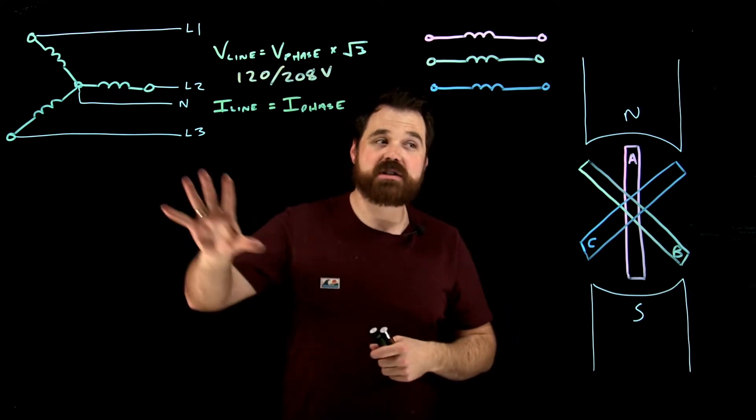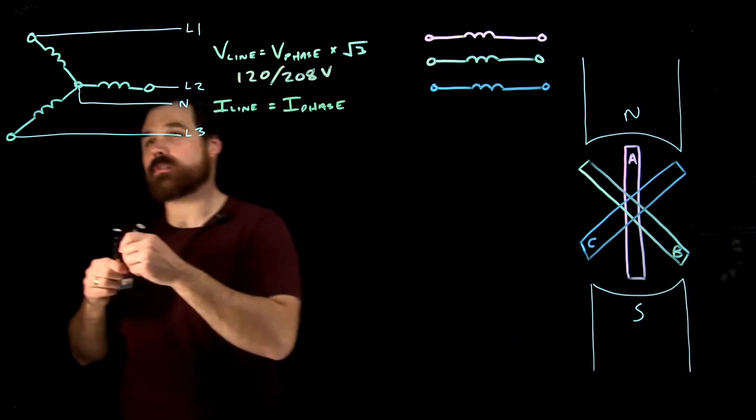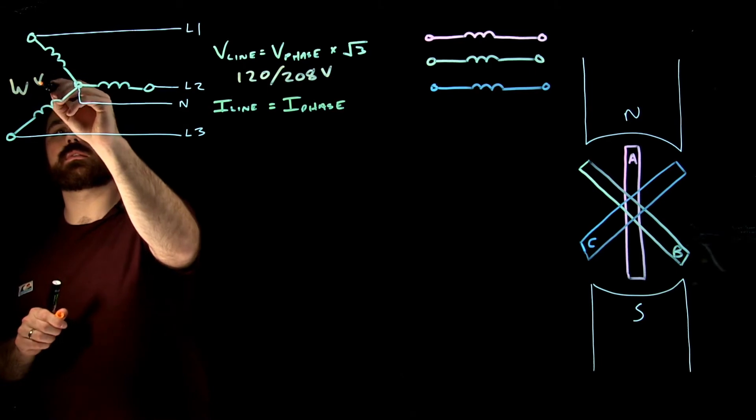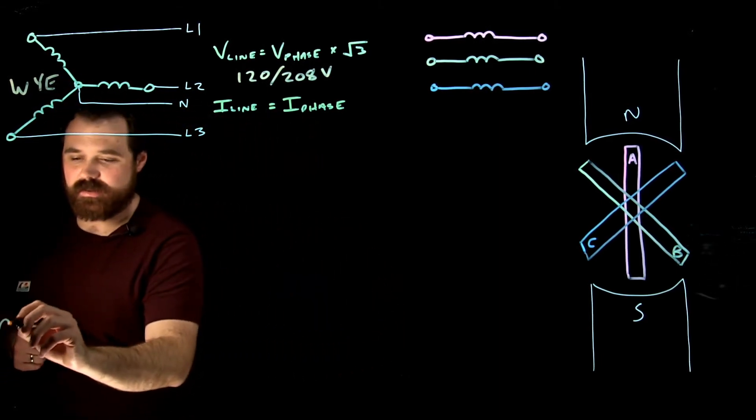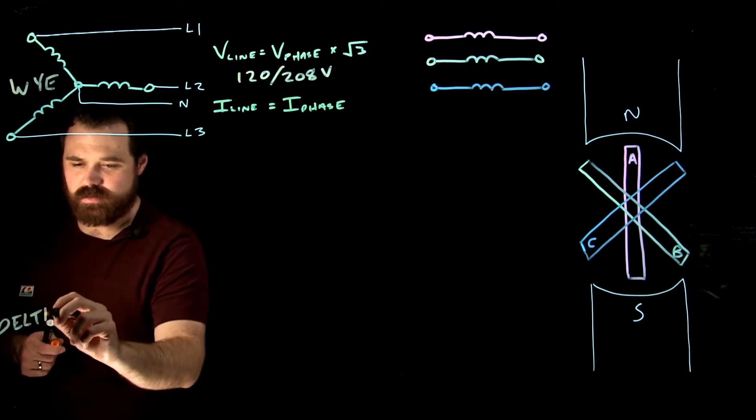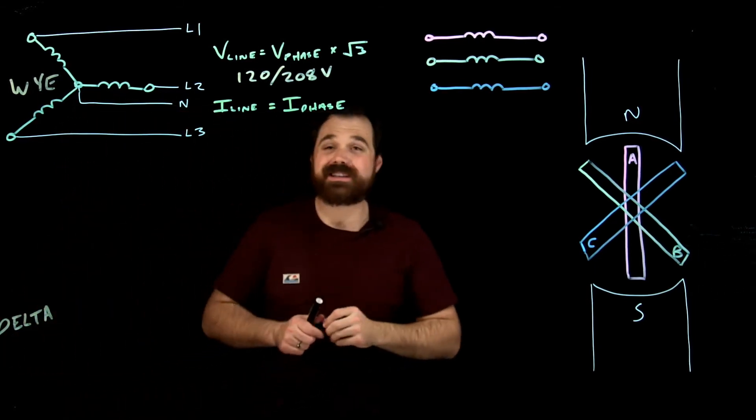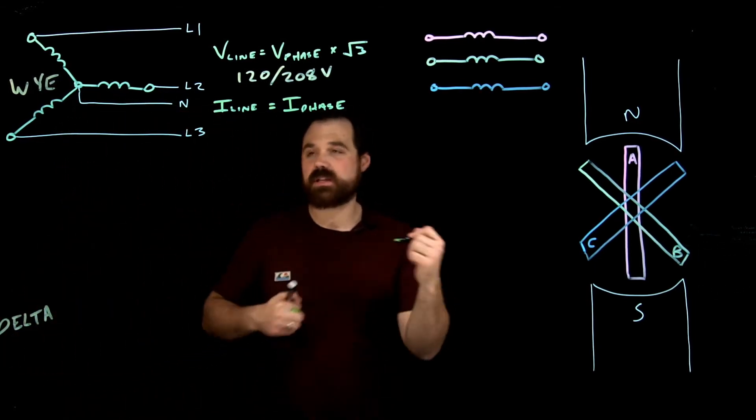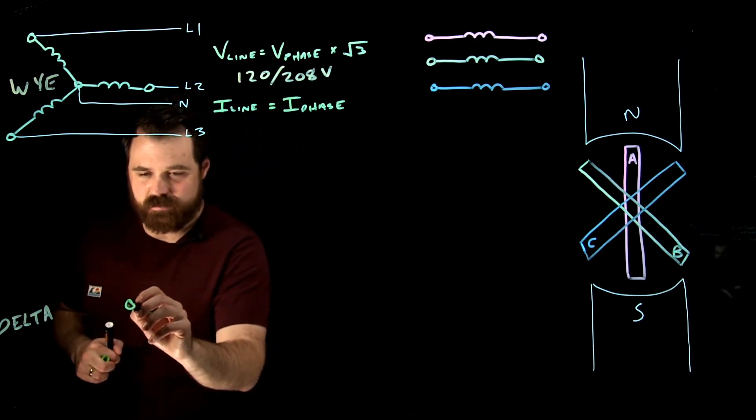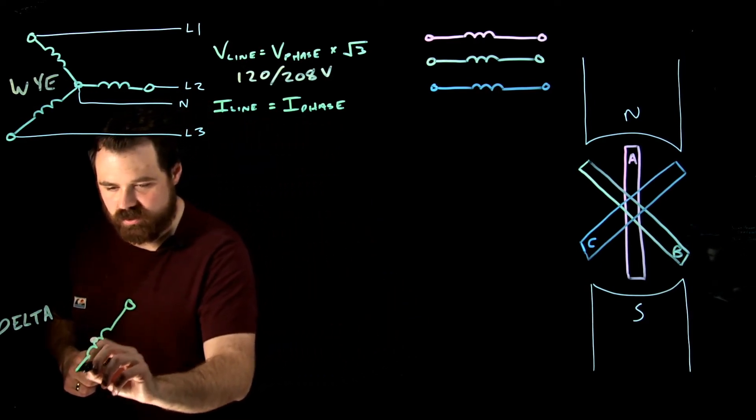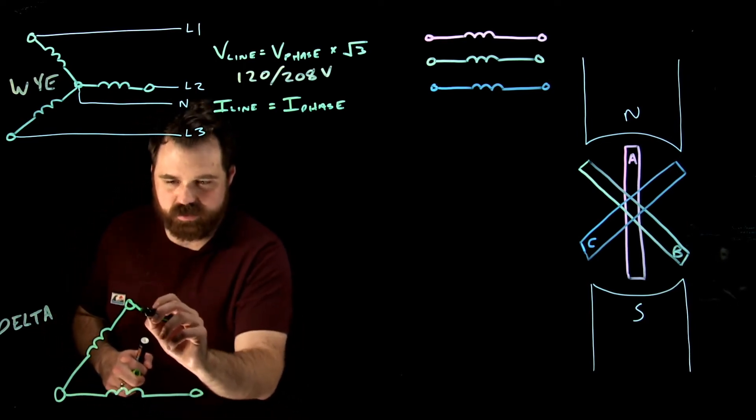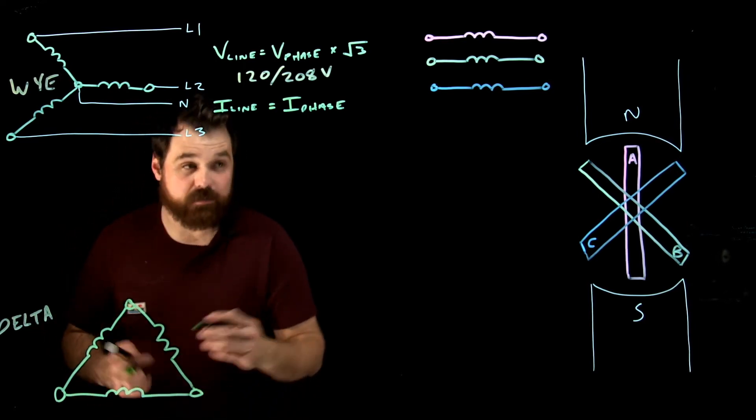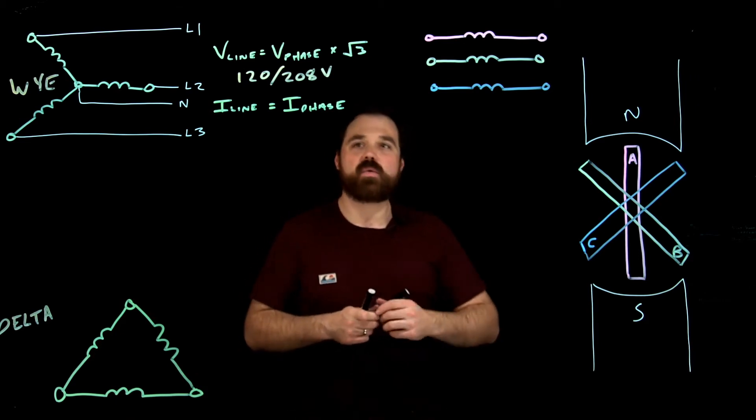Now the other option, so this is a Y connection. The other option is a delta connection. Now, in a delta connection, what we do is we take our three windings, we connect them up so that our corners are connected. So they would be connected like that. We just take the same three windings.